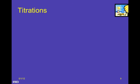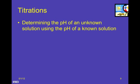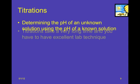So what is something that we can use pH for besides just figuring out if something is an acid or base, which on its own is pretty important. Well, we can use them for something called a titration. And what a titration is, is determining the pH of an unknown solution to a very high precision using the pH of a known solution.